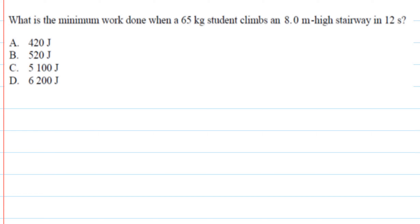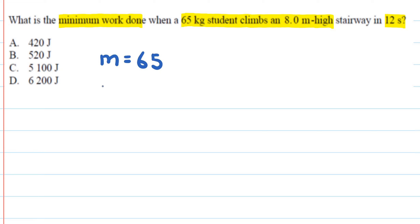This is the homework video guide for the energy chapter. For this very first problem we need to calculate the minimum work done when a 65 kilogram student climbs an 8 meter high stairway in 12 seconds. The mass is 65 kilograms, the height is 8 meters, and the time is 12 seconds.